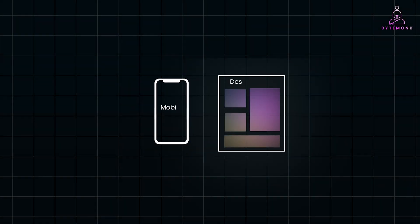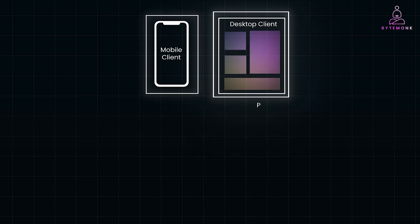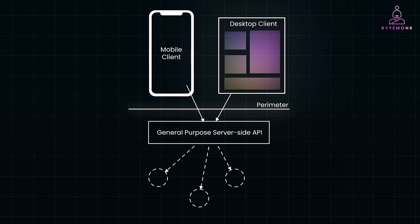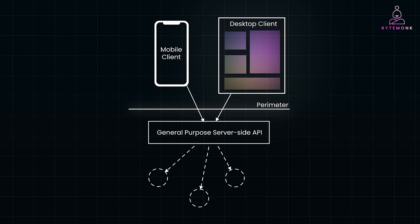A common first step in supporting multiple UI types is to start with a single server-side API and gradually add more functionality to accommodate new mobile interactions. When different UIs need similar API calls, a general-purpose server-side API can work well. But mobile experiences often differ greatly from desktop web experiences. Mobile devices have less screen space, which limits data display, and opening multiple connections can drain battery life and data.